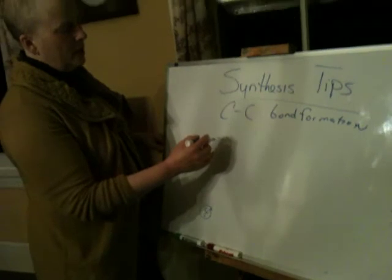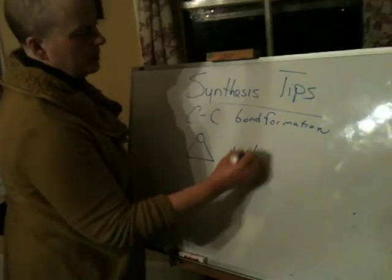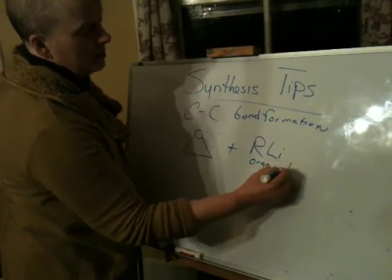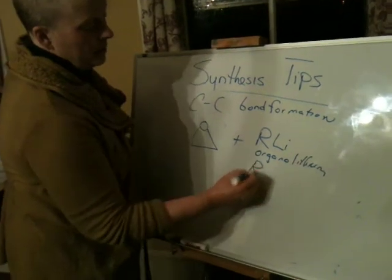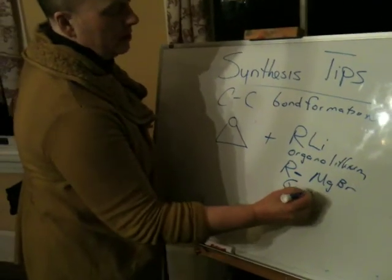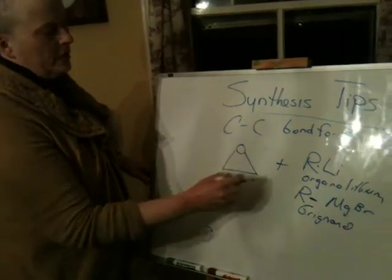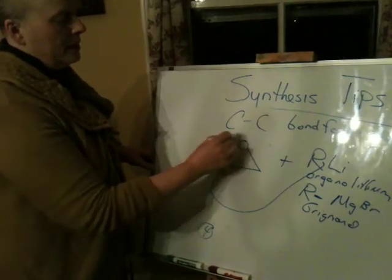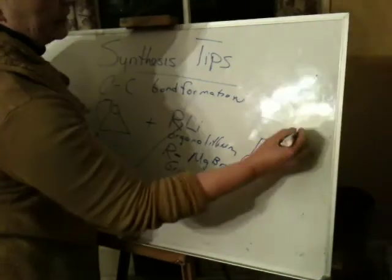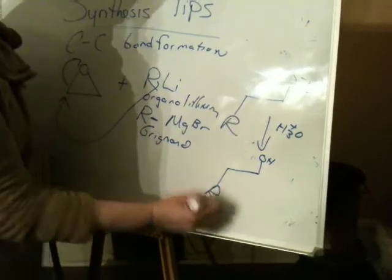If you have an epoxide and you add a super base to it — which could be in the form of an organolithium or a Grignard — the strong base will attack the epoxide. The epoxide will open up and you will end up with an alkoxide structure. Then you can add acid in a second step and you will get an alcohol. This alcohol can be converted into a variety of compounds. That is one carbon-carbon bond formation.